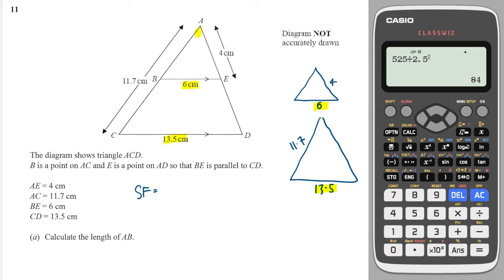It's quite clear to see that the corresponding sides are the ones opposite the angle that they both share. That's 6 and 13.5. So the scale factor is 13.5, which is the larger one, divided by 6, which is 2.25. Now I need to find the length of AB. AB is in the smaller triangle and it's the left-hand side. I want to go backwards, which means I'm going to divide. So I do 11.7 divided by 2.25, and I get an answer of 5.2.